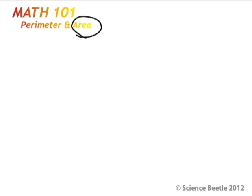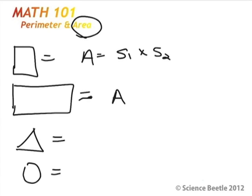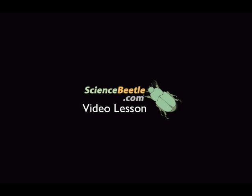In summary, the area equations are as follows: the area of a square equals S1 times S2; the area of a rectangle equals length times width; the area of a triangle equals one-half times the base times the height; and the area of a circle equals pi r squared. Hope that helps. Go back and review if you need to, otherwise subscribe and check us out in the next video.